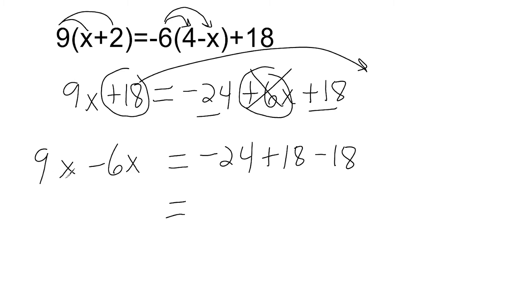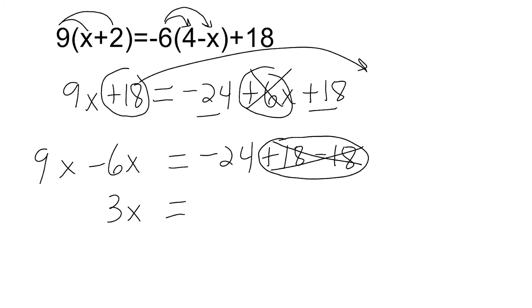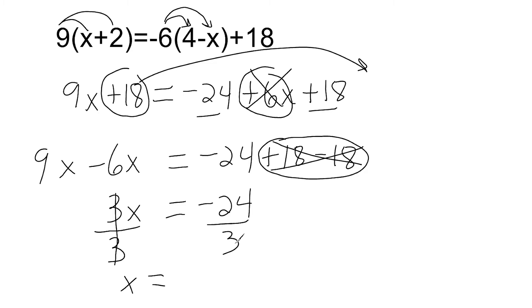Now we take 9x minus 6x, which is 3x. Right away I see some opposite integers — when that happens they make 0, so we cross those off, leaving us with just negative 24. Now we divide both sides by the coefficient of 3, leaving us with x equals negative 24 divided by 3, which is negative 8.